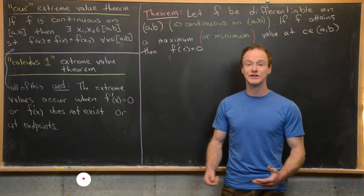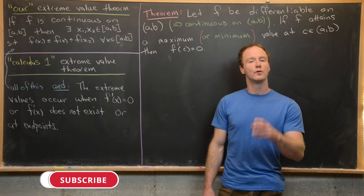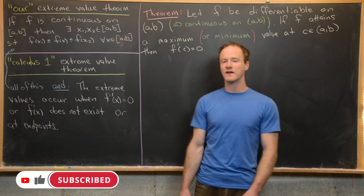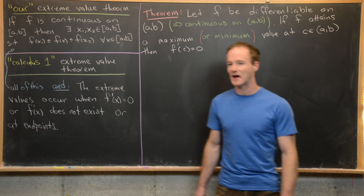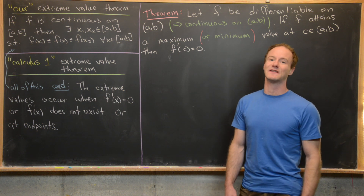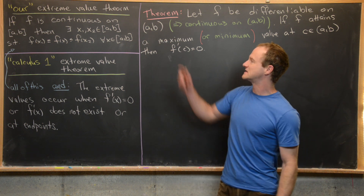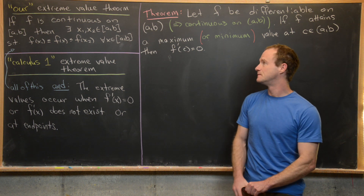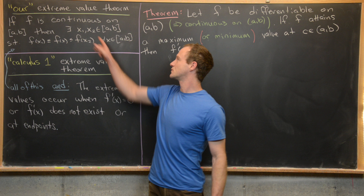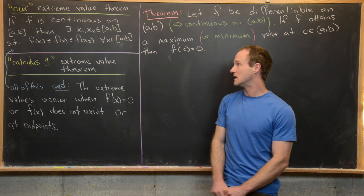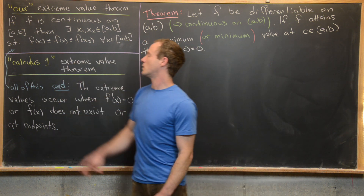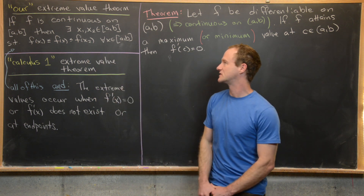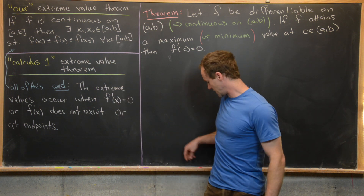Back when we were looking at continuous functions and continuity, we proved the extreme value theorem. This is the real analysis version of the extreme value theorem that doesn't say anything about derivatives. It says that if f is continuous on a closed interval [a, b], then there exist x1 and x2 in [a, b] such that f(x1) ≤ f(x) ≤ f(x2) for all x in [a, b].